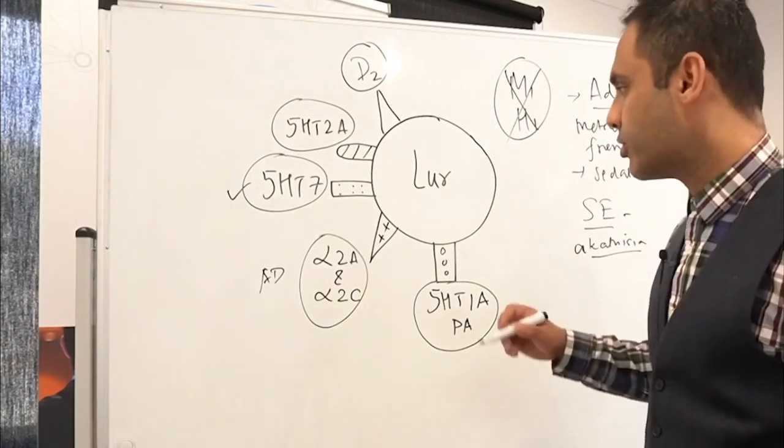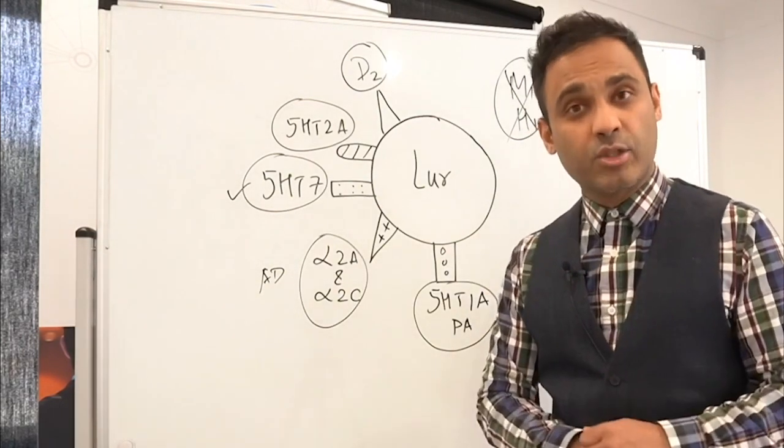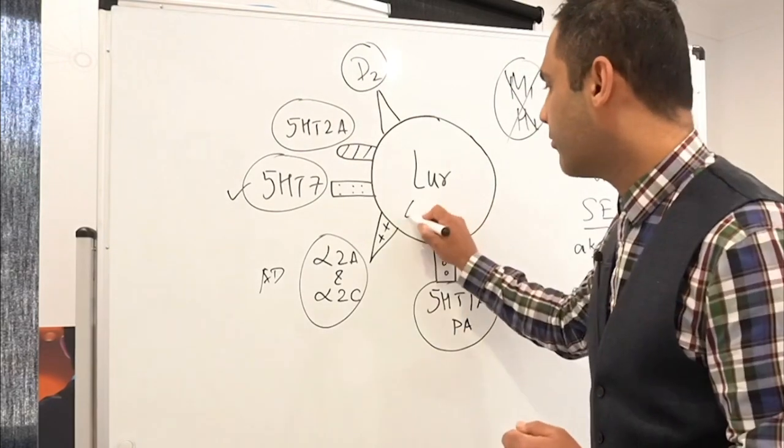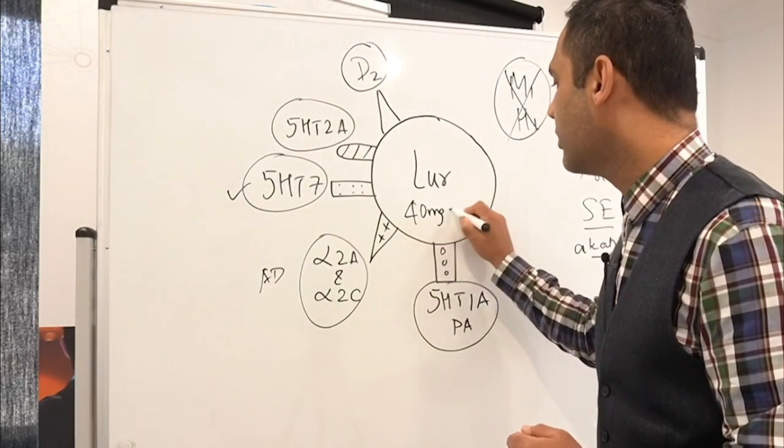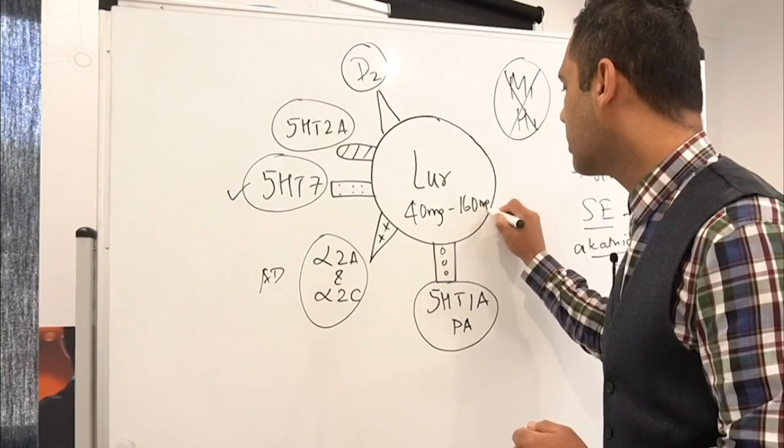Why after food? Because absorption of lurasidone is enhanced by food. So it's crucial that it's given in the evening after food to maximize absorption, but to minimize akathisia incidence as well. What are the doses of lurasidone? It can be started at 20 milligrams. However, generally 40 milligrams, it can be started off and it goes to 160 milligrams.